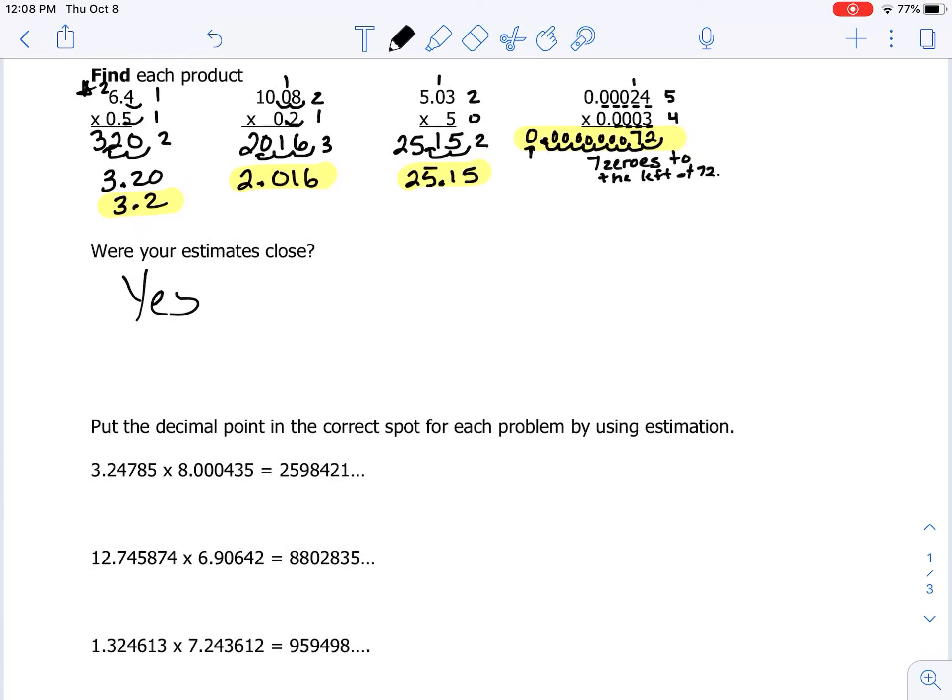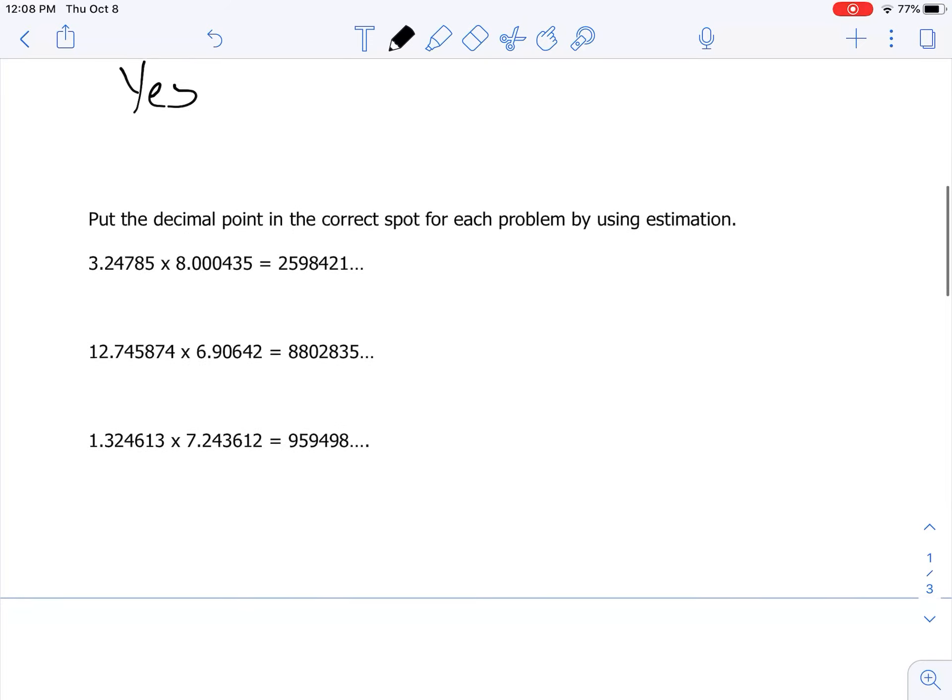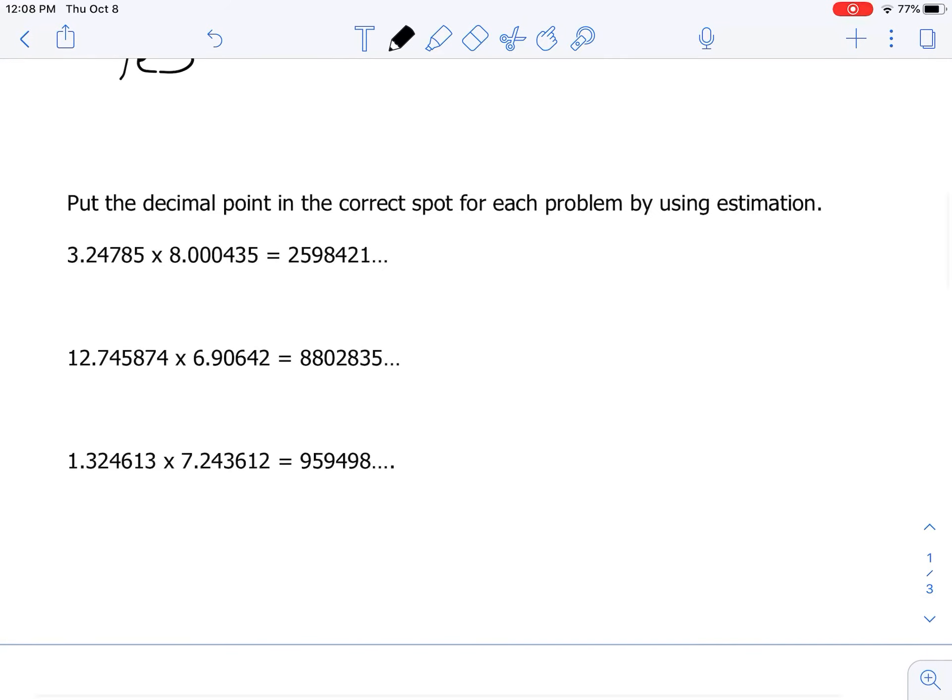Okay, let's go on to the next part here. We want to put the decimal point in the correct spot for each problem by using estimation. So I'm going to round each of our numbers and then multiply, and we'll decide where to put the decimal point in the actual product.